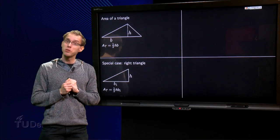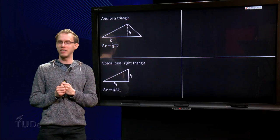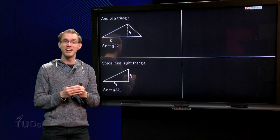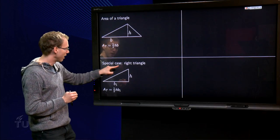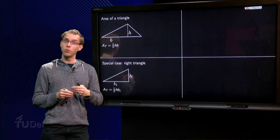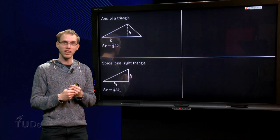Well, first we are going to look at a special case. We are going to look at the right triangle and we are going to prove that the formula is correct in the case of a right triangle, with height h and base b1. So we have to prove that the area of the triangle equals one-half times h times b1 in this case.